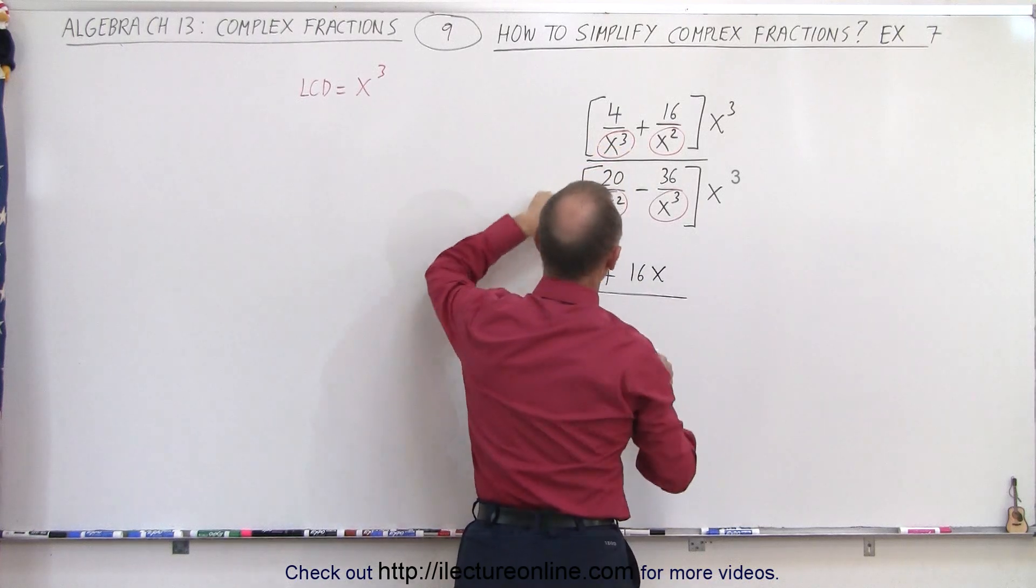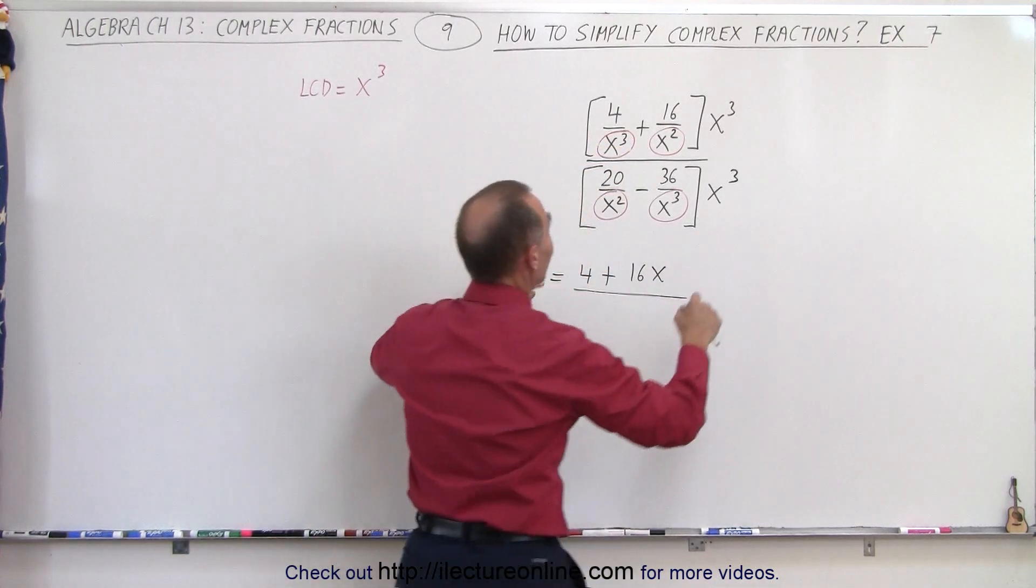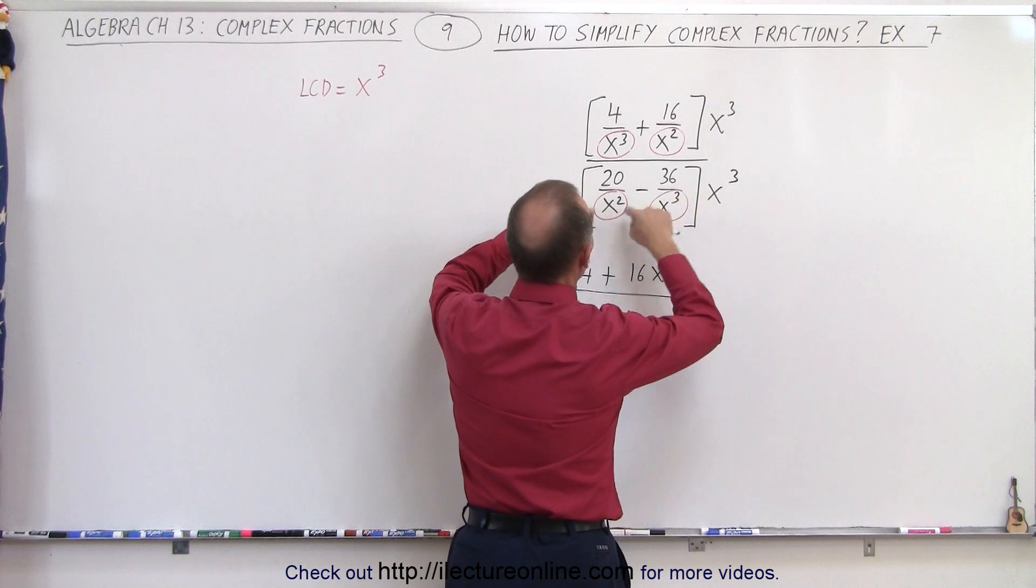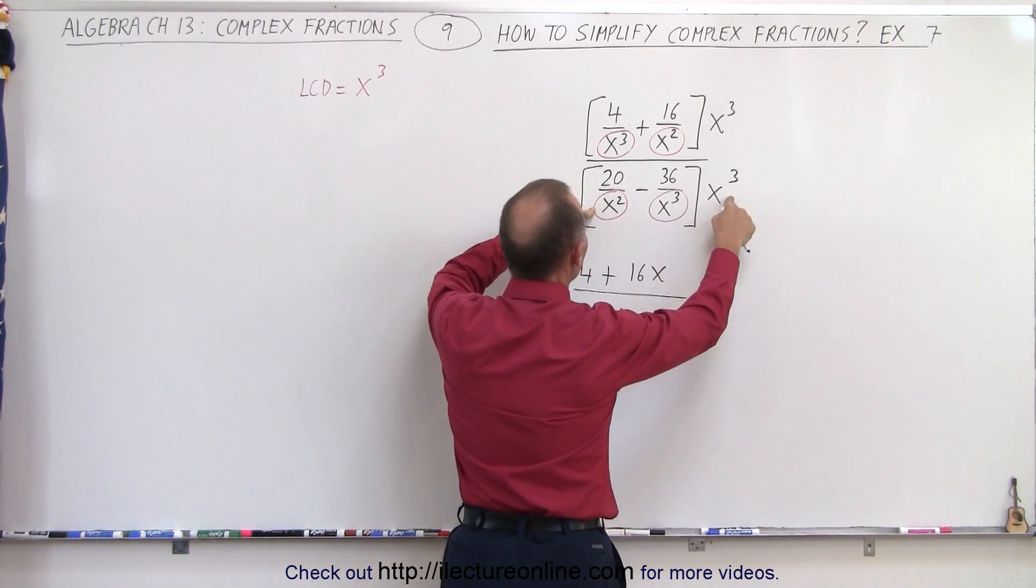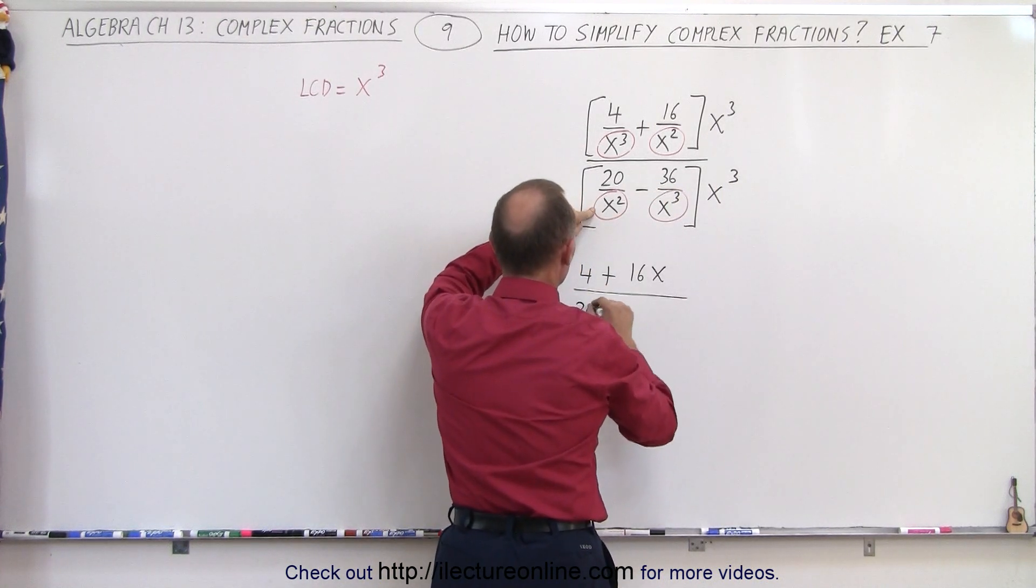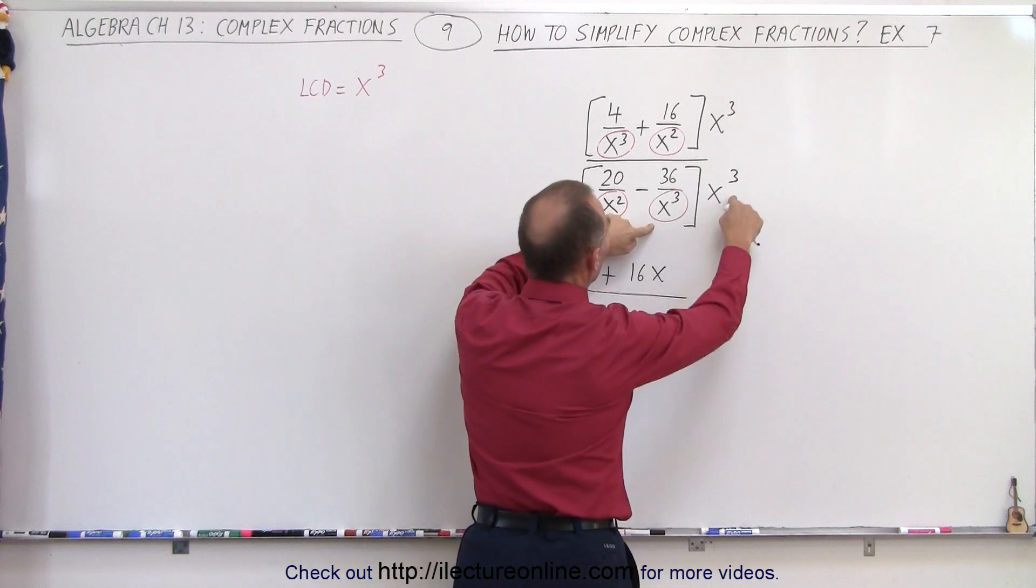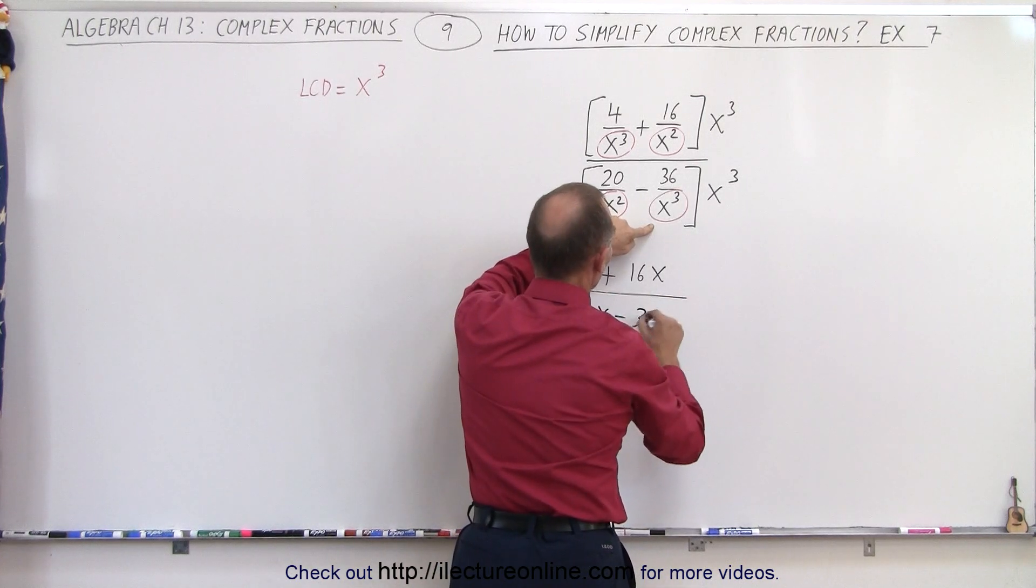divided by. So now, multiplying x cubed divided by x squared, well that gives me x times 20 gives me 20x, minus x cubes cancel out, minus 36.